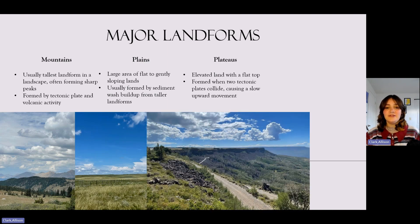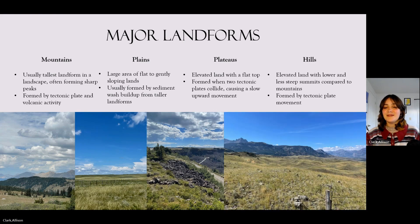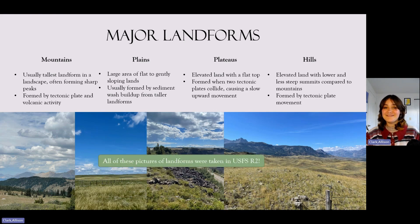There are also plateaus, which is elevated land with a flat top, formed when two tectonic plates collide causing a slow upward movement. Finally, there are hills — elevated land with lower and less steep summits compared to mountains, but also formed by tectonic plate movement. All of these pictures come from the USFS Rocky Mountain Region, where you'll be working this summer.